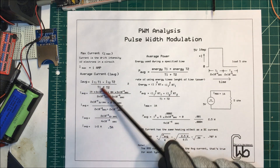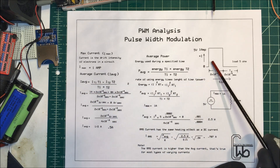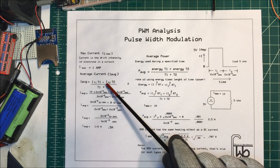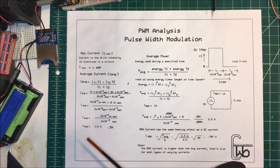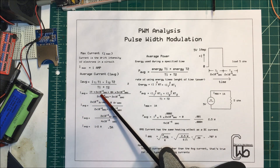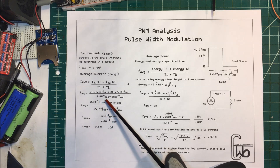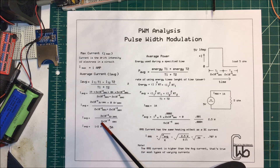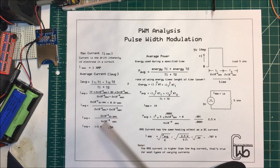To find our average current, we use this formula. The I-average is going to be the current in T1 times the time, plus the current over here times the time — which is zero in our case — divided by the total amount of time. So we have 1 amp times 2×10⁻⁴ seconds, divided by 2×10⁻⁴ plus 2×10⁻⁴, which is 4×10⁻⁴. That gives us 0.5 amps.